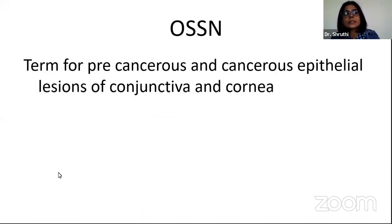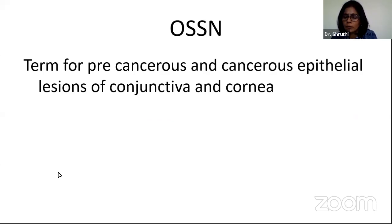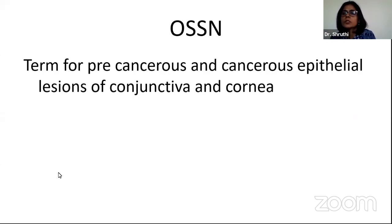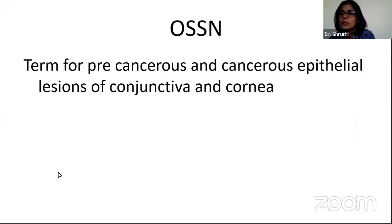OSSN is a term for precancerous and cancerous epithelial lesions of the conjunctiva and cornea. CIN and squamous cell carcinoma fall broadly into ocular surface squamous neoplasia. CIN is mainly a histopathological diagnosis. This includes dysplasia and conjunctival intraepithelial neoplasia, which accounts for about 39%, and squamous cell carcinoma, which is 75% seen in men when it comes to sex predilection.